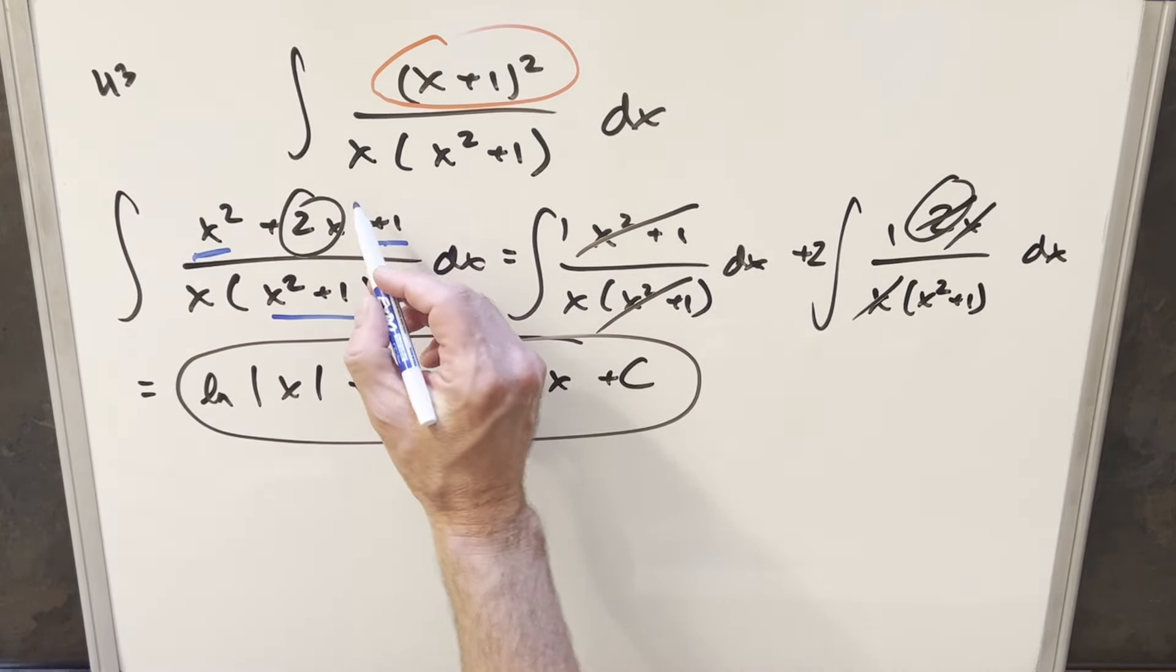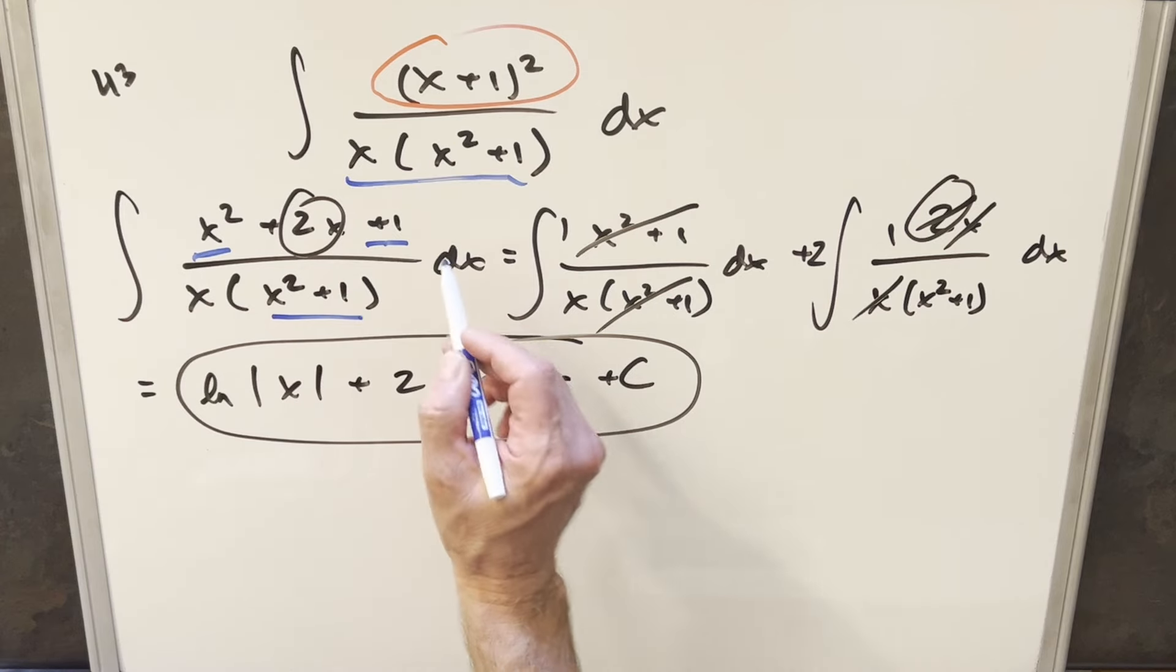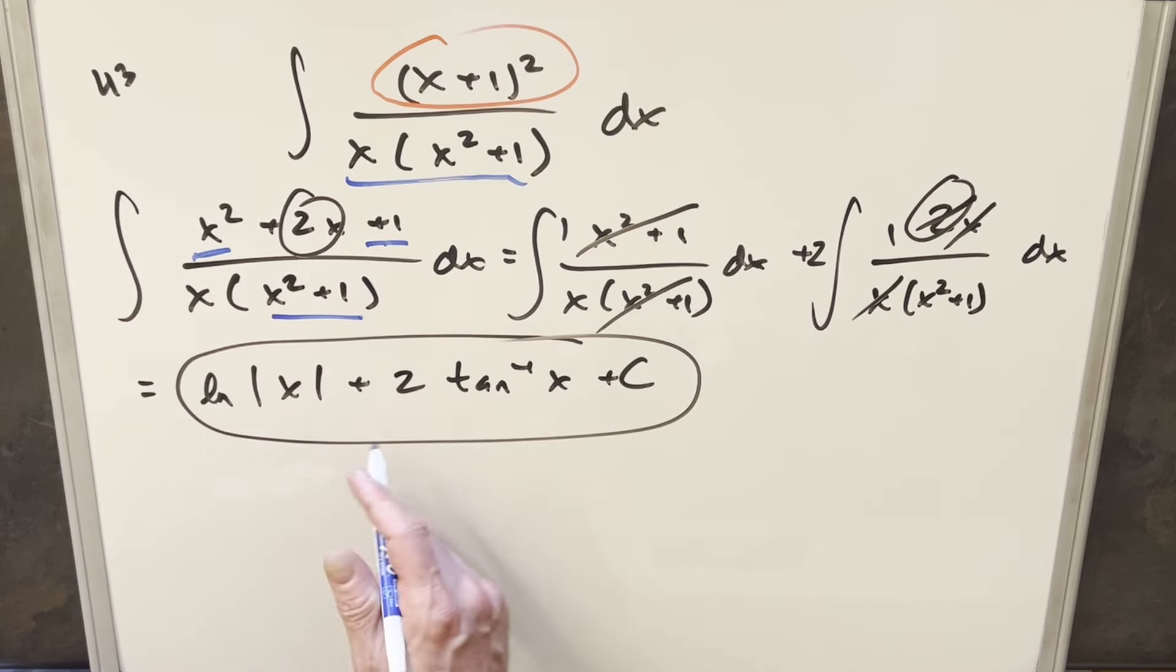So I think what I did wrong the first time I did this was I actually multiplied all this together, and then I got some much more complicated—I got the arctan, but I got a much more complicated expression with the natural logs. It was probably the equivalent, but it was a mess.